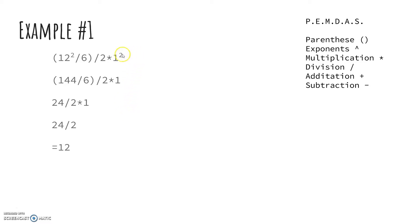So first you have to do exponents, so 1 to the second power is 1 and then 12 to the second power is 144. And then next would be parentheses, so you do 144 divided by 6, which is 24. And then so you get 24 divided by 2 times 1, and 24 divided by 2 is 12.